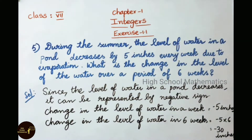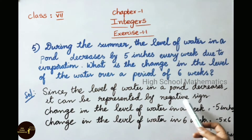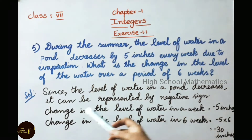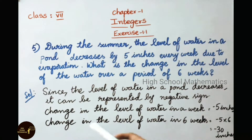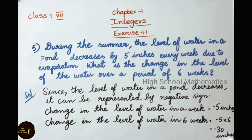Let us see the solution. Since the level of water in a pond decreases, it can be represented by a negative sign. Change in the level of water in a week is 5 inches; since it is decreasing, we represent it as minus 5 inches. Change in the level of water in 6 weeks equals minus 5 into 6, that equals minus 30 inches. So the change in the level of water over a period of 6 weeks is minus 30 inches.